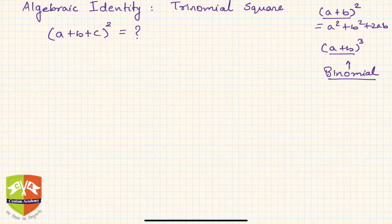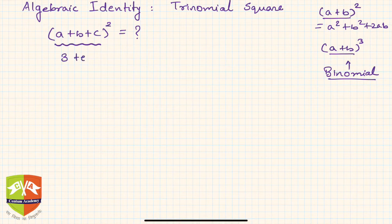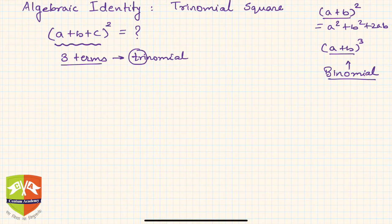Now we are going to discuss trinomials, and especially the square of a trinomial. If you can see here, a + b + c is a trinomial because there are three terms. Three-term algebraic expressions are called trinomials — because 'tri' means three.